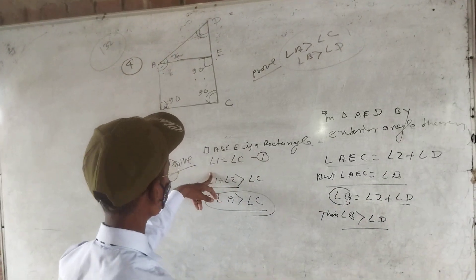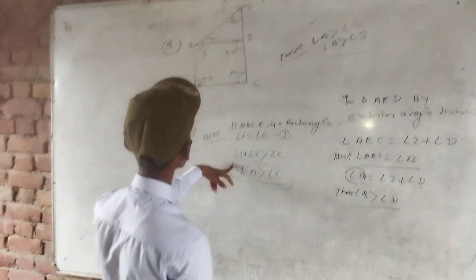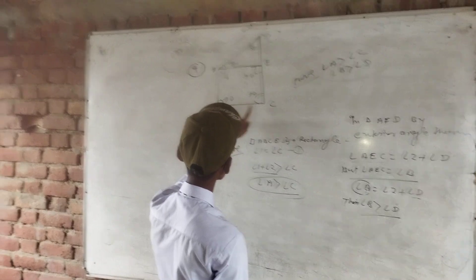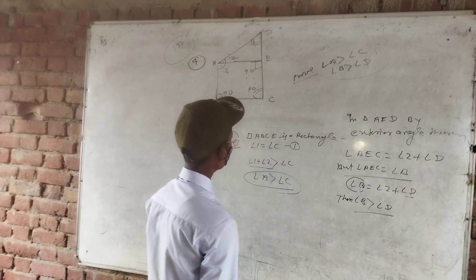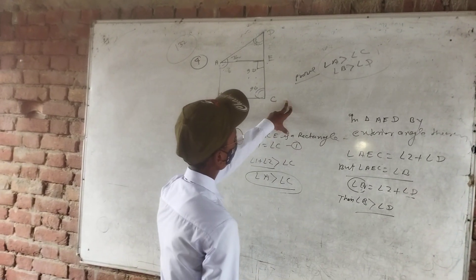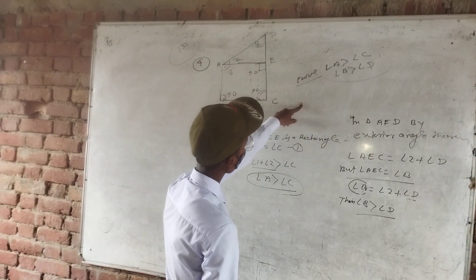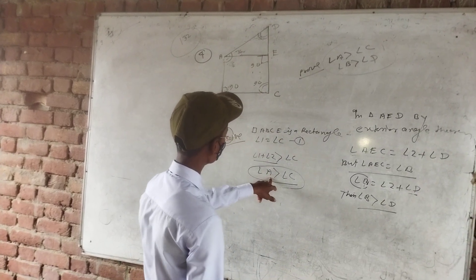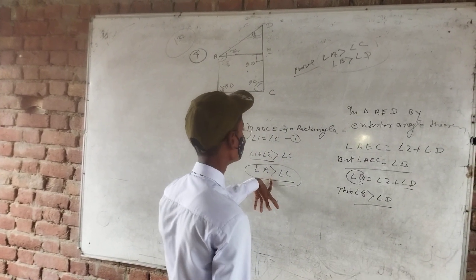Angle 1 equals angle C. Angle 1 plus angle 2 equals greater than angle C. So prove that angle A is greater than angle C, so that it is true. Angle A is greater than angle C.